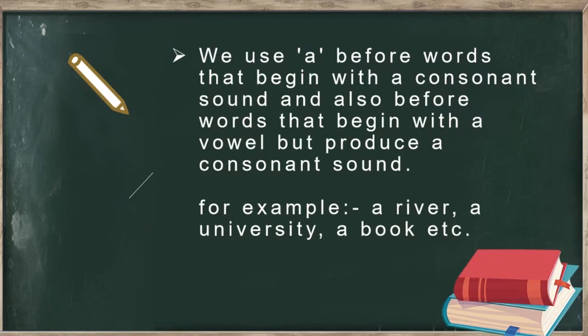Look at the examples. A river — 'r' is a consonant, so we have used 'a' before it. Next, a university — 'u' is a vowel, but when we pronounce it, we say 'university,' which gives the sound of a consonant, that is 'y.' So we use 'a' before university. Next, a book — 'b' is simply a consonant, so we use 'a' before the word book.